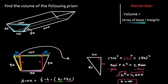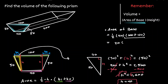Now we have enough information to find the area of the base. It will be one half times 40, times the sum of the first base — which is 100 — plus the second base — which is 40. Multiplying one half by 40 gives 20, and 100 plus 40 is 140. So 20 times 140 equals 2,800.